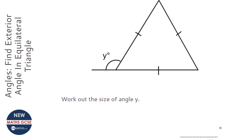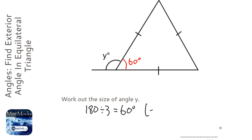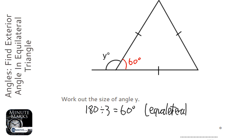Here we have an equilateral triangle, and all you need to know about an equilateral triangle is that all the angles are 60 degrees. The reason for that is angles in a triangle add up to 180, and there are three equal ones, so we divide that by three, and that gets 60 degrees. It's an equilateral triangle.